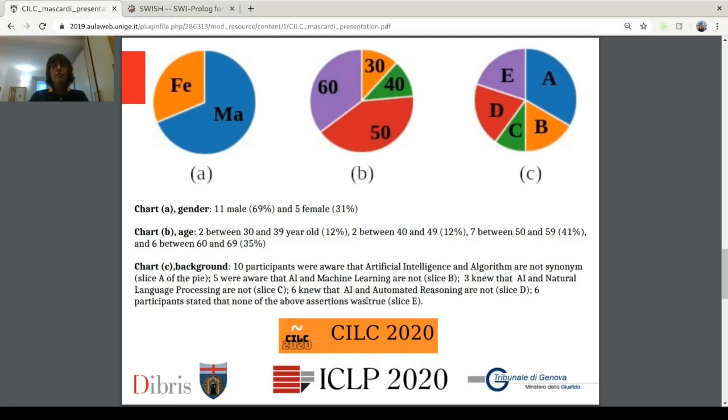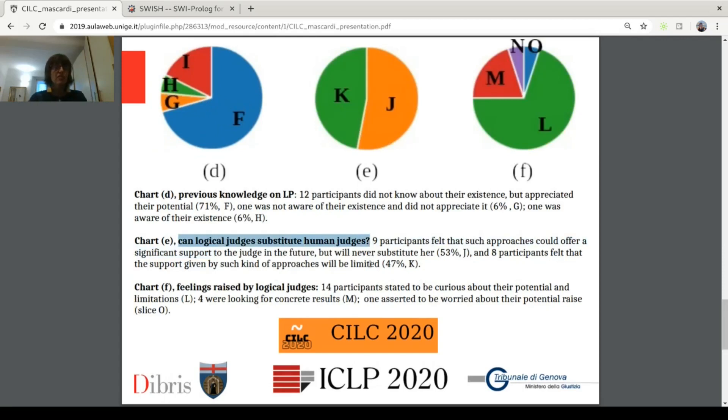But, in the end, those who answered the survey, but we also had a very strong feeling during the course with all the 70 magistrates were happy and they appreciated the fact that some techniques exist. They are not confident that these logical judges can substitute human judges, which is very true and what we wanted to convey, you will not be substituted by machines, but they think that they may help. And the feeling raised by logical judges are curiosity, also some interest in seeing concrete results and only one among the 17 that answered the survey said that he or she was worried about their potential rise. And this ends my short presentation and I will be here for the live question and answering time. Thank you.